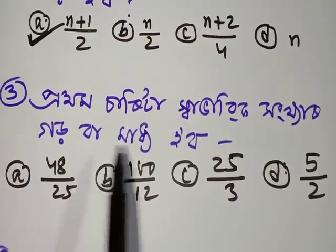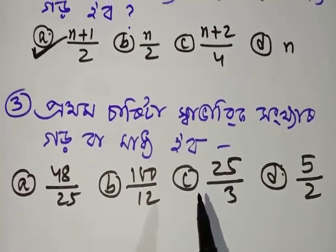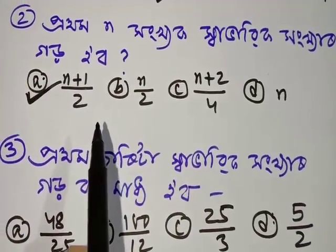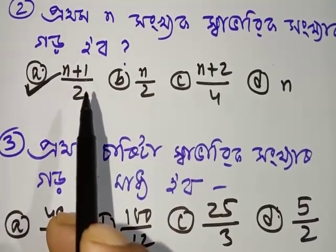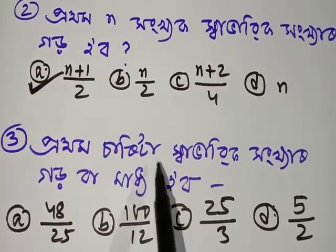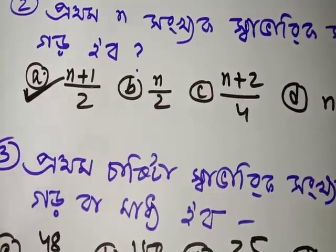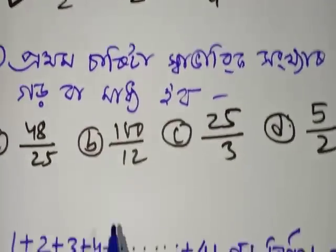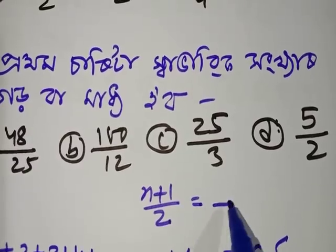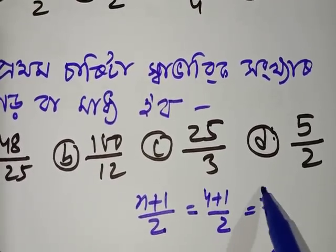We have to remember this and then think about what we should do now. We have to find it — this is useful. Since we are only calling in this number, we have 4. This number is n plus 1 by 2. So n plus 1 by 2: this number is 4 plus 1 by 2, which is 5 by 2.